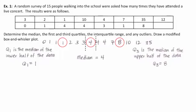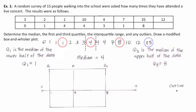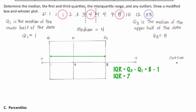The value 35 looks suspect — is it an outlier? The interquartile range is 7. We compare 35 to our outlier formula: Q3 plus 1.5 times the IQR, which is 8 plus 1.5 times 7. That value is lower than 35, so 35 is confirmed as an outlier. The interquartile range is 7.